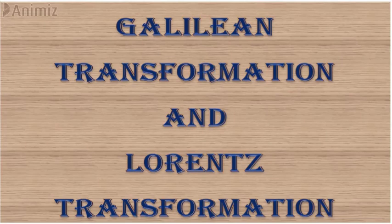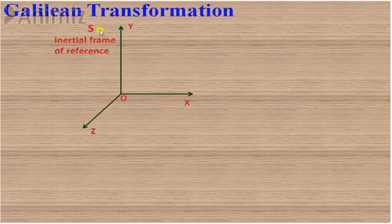Hello guys, welcome to this lecture on Galilean transformation and Lorentz transformation. We'll start with the Galilean transformation. Transformation means suppose there are two inertial frames of references — the equations which help us convert one frame of reference to the other are called transformation equations. These transformation equations were developed by scientist Galileo, so we call them Galilean transformation.